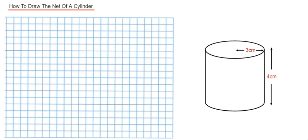Hi guys, welcome back. Today I'm going to show you how to draw the net of a cylinder. The one we're going to draw has a radius of 3 cm and a height of 4 cm. The first thing you need to do is draw the rectangular face around the center of the cylinder.